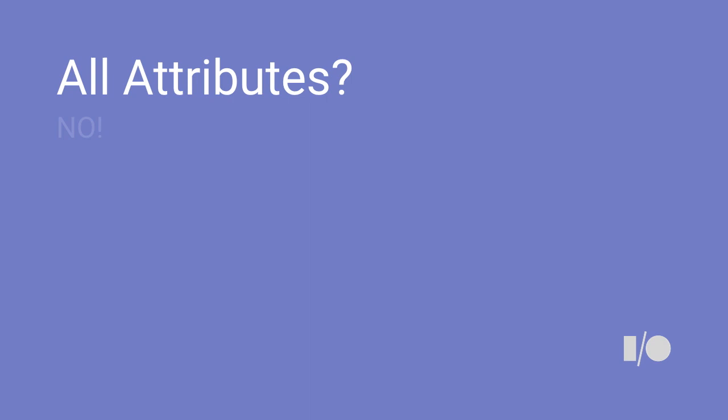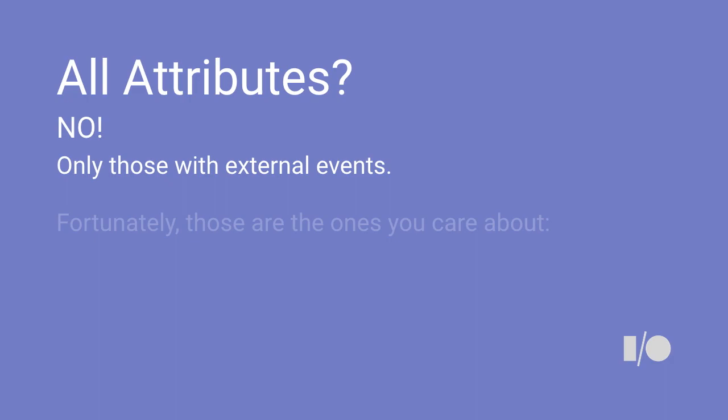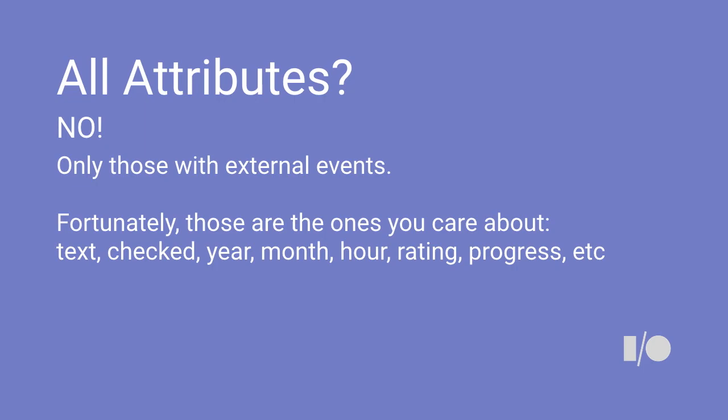These kinds of solutions we do in data binding — like changing the framework — would only work on new devices. By doing these workarounds, we can support data binding all the way back to API 7. So does this work on all attributes? Well, no. We need events to know whether the attribute has changed, so we only work with attributes that have change events — like TextWatcher, like checked-changed. Almost everything you care about already has a change notification because these are the things the user is interacting with.